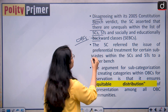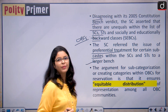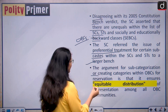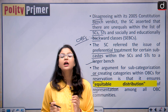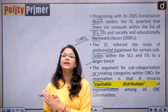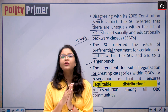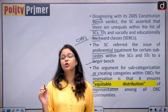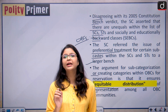The Supreme Court referred the issue of preferential treatment for certain subclasses within the SCs and STs to a larger bench. The argument for subcategorization is that it ensures equitable distribution of representation amongst all OBC categories. Quantifiable data shows an unequal distribution of reservation benefits within these groups, and that is why the Supreme Court made such strong observations in the 2020 case.